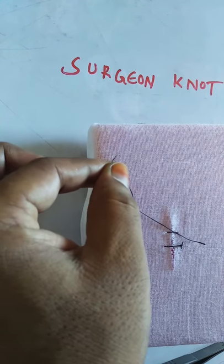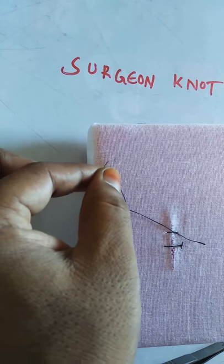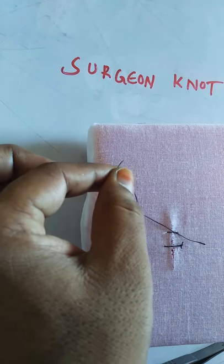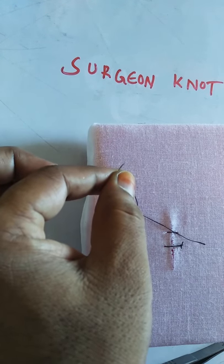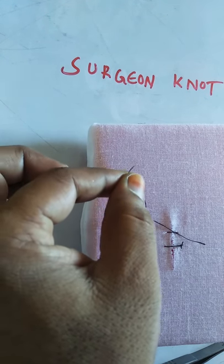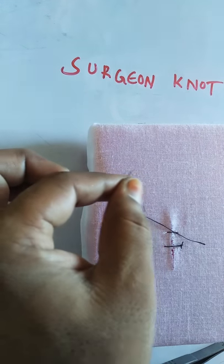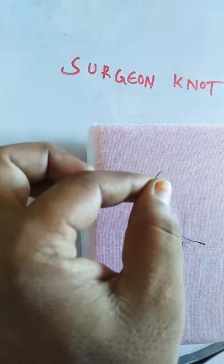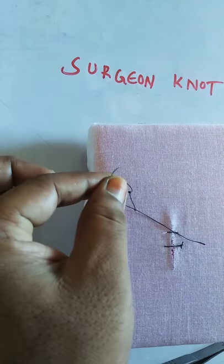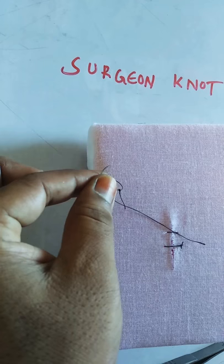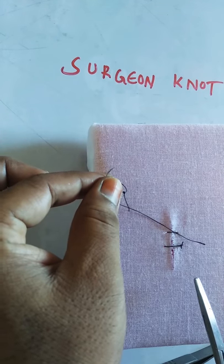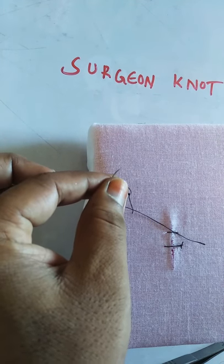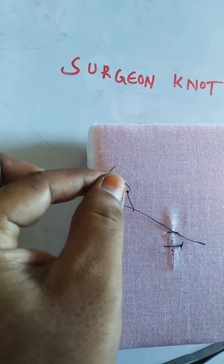The advantage of the surgeon's knot is that because there are two throws of suture material, the first tie will not slip — it is stabilized. That is the advantage of the surgeon's knot over the square knot.